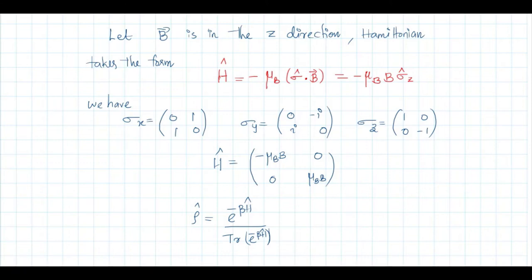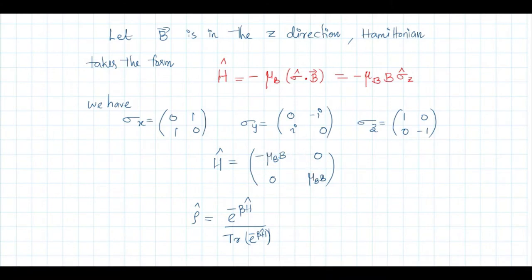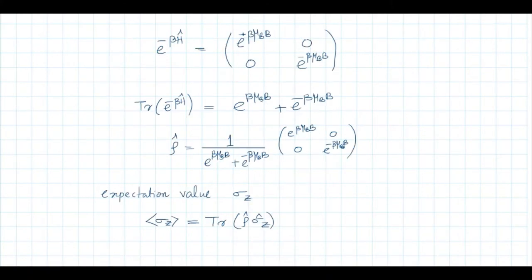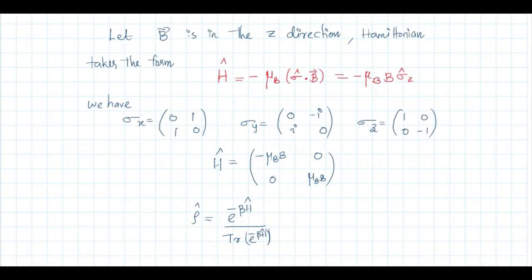Now, the density matrix from the canonical ensemble is ρ = e^{-βH} / Tr(e^{-βH}). First we want to take the exponential of this matrix, that is e^{-βH}. Since this matrix is diagonal, we can directly take the exponential of the diagonal elements. This is possible only if the matrix is diagonal.